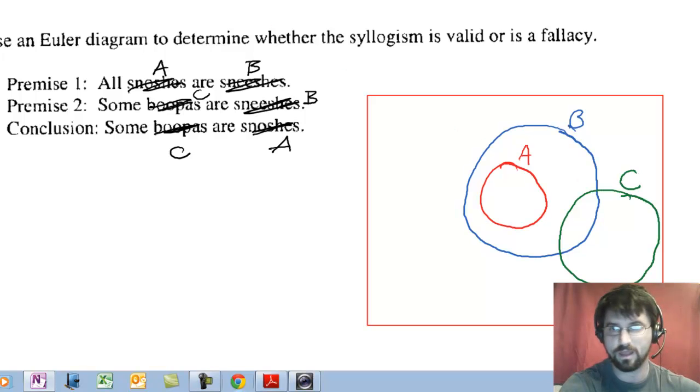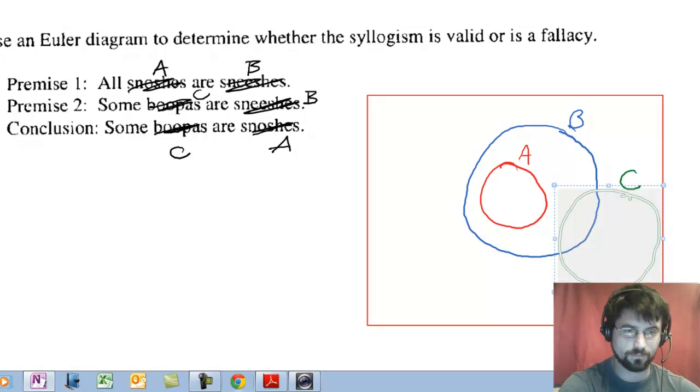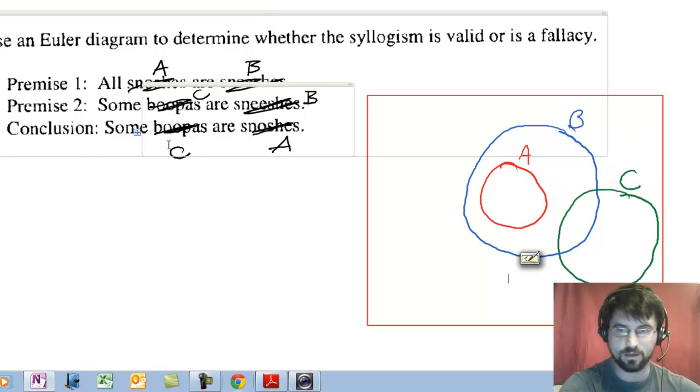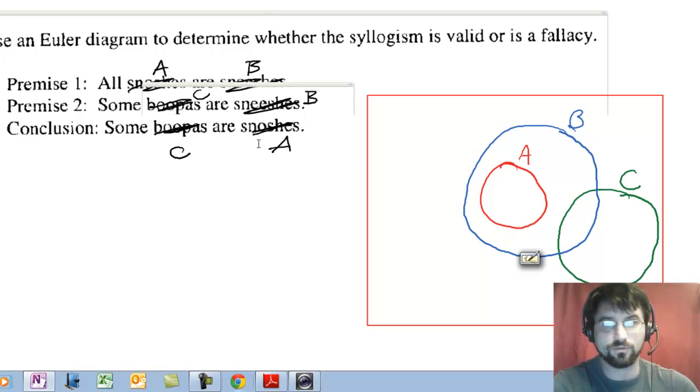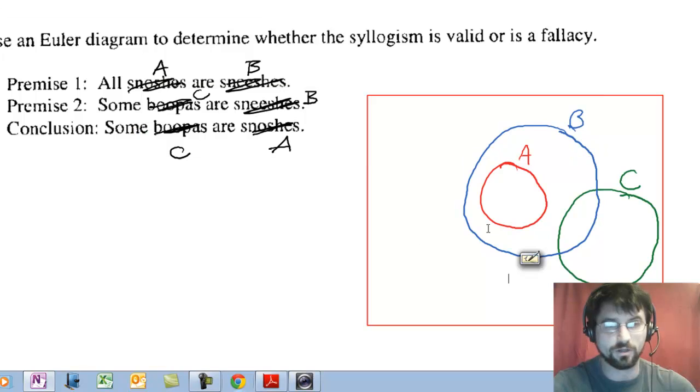Some C's are B's. Now I have some options here. See the C's here? I could actually have this so that they overlap, but I don't want that. Why don't I want that? Because the conclusion is that some C's are A's, and I want to show if it's possible that this argument is not valid. How do I do that? By demonstrating with the picture that I can draw the premises and the conclusion is not necessarily part of the picture.